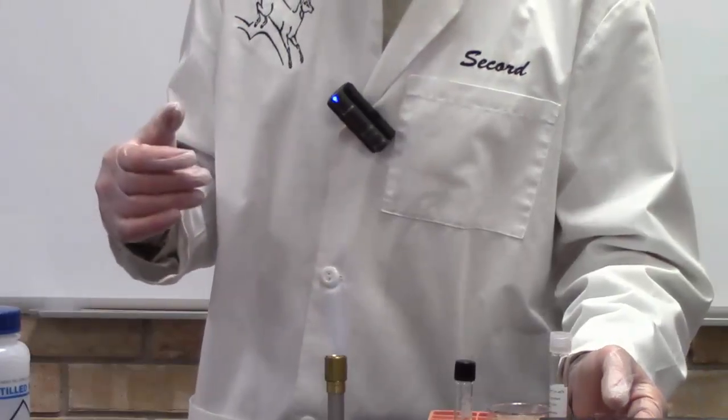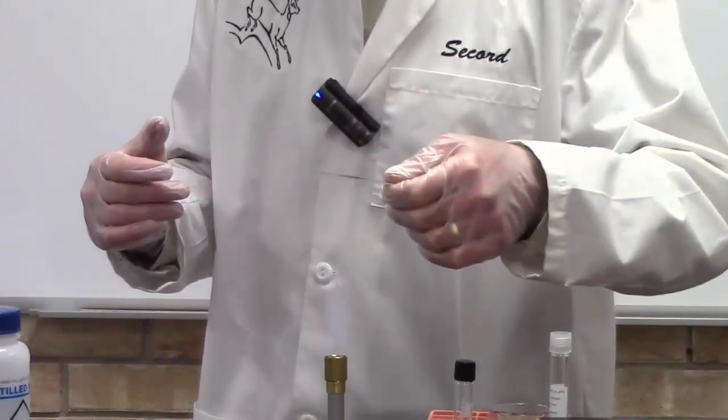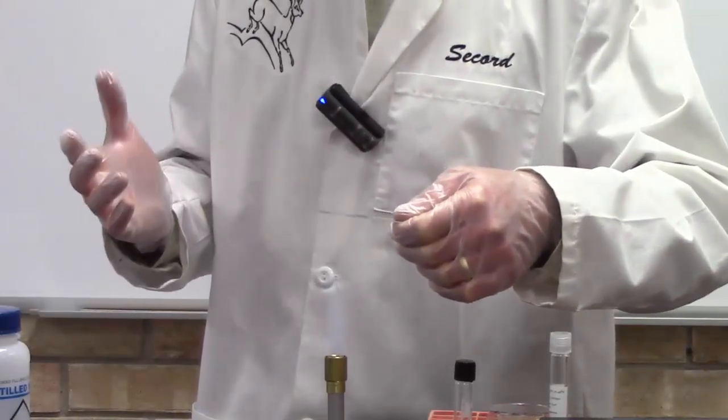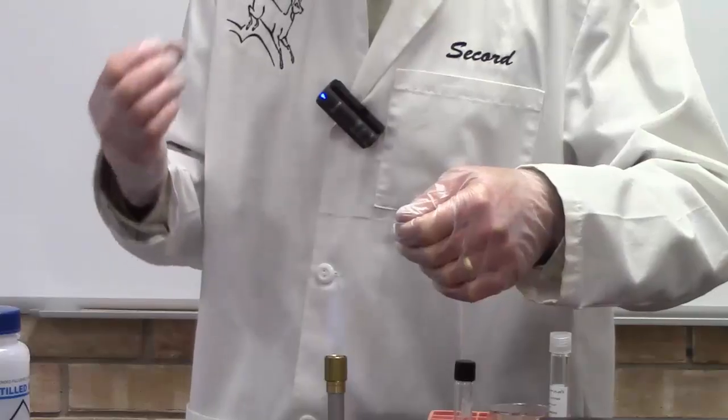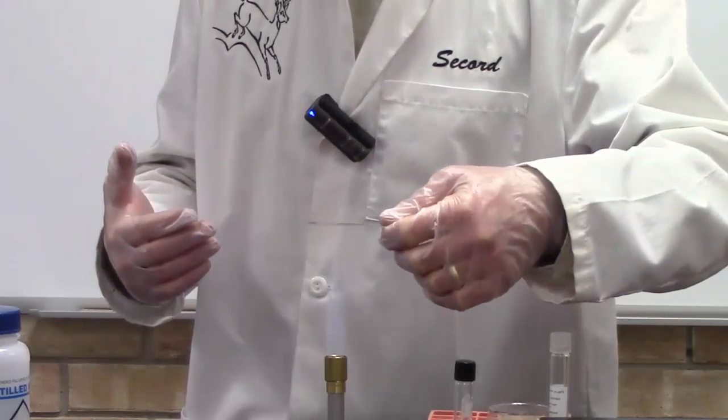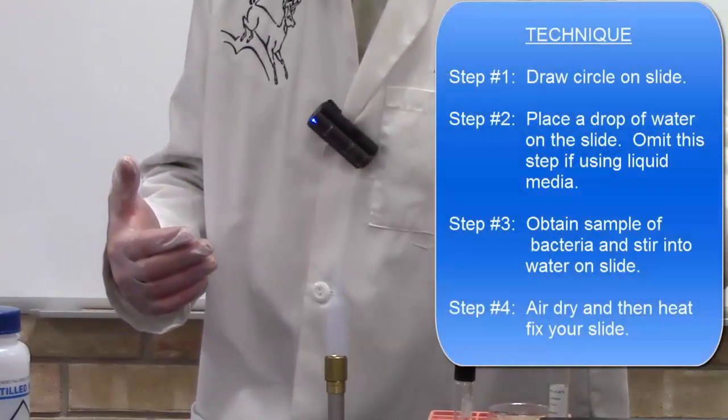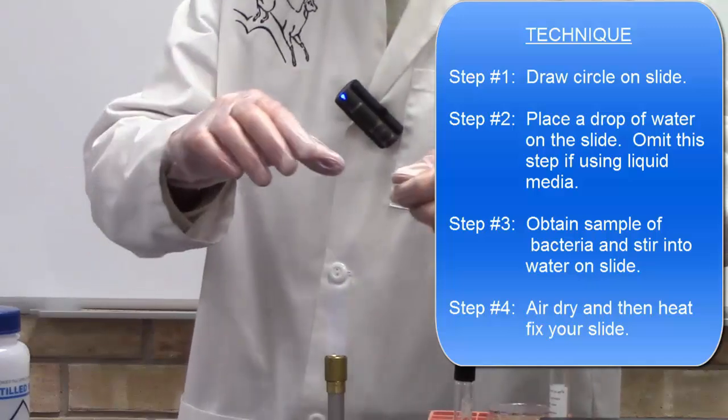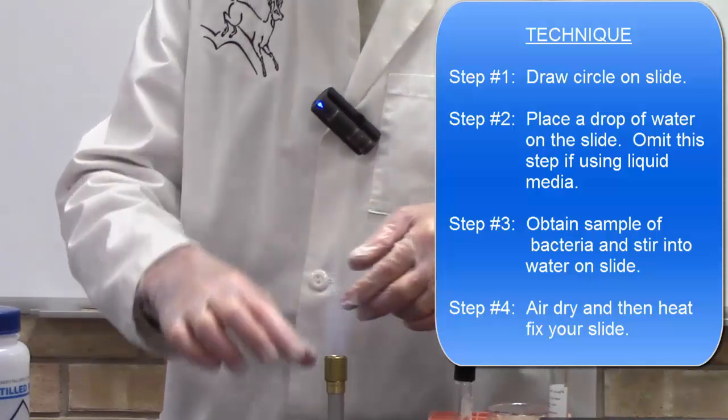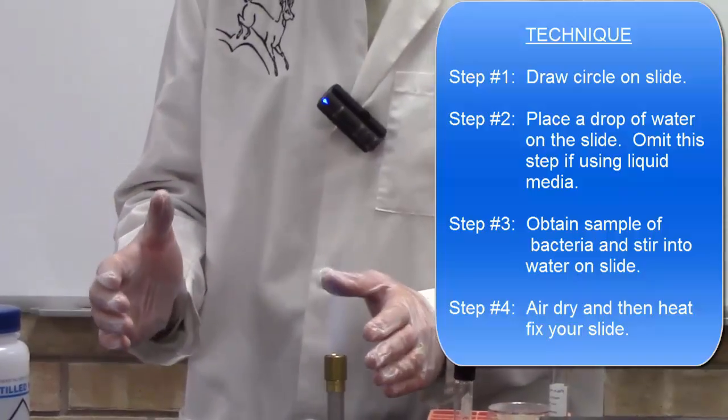After the water has evaporated, next we'll need to heat fix it. To heat fix your slide, you just run it through the flame three times. Don't hold it in the flame because the heat will distort the bacteria. You just pass it through. So something like this: one, two, three. And there you go, it has been heat fixed. So that is the proper way to do a bacterial smear.